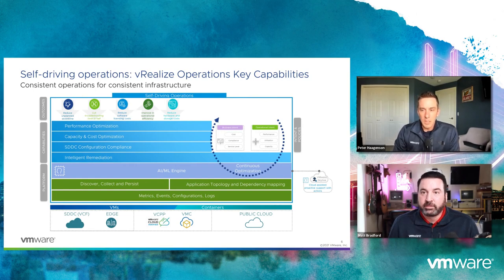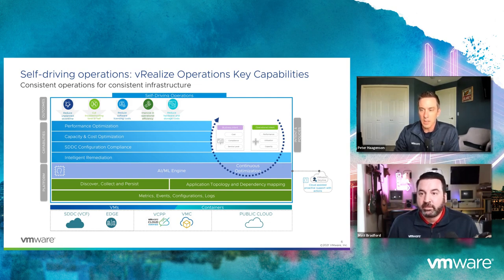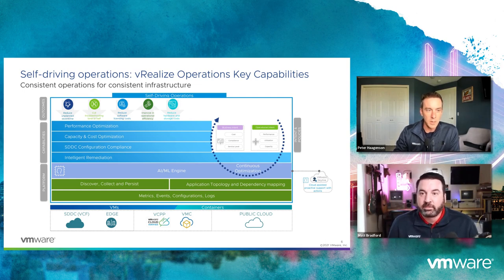Let's visualize what it means to have consistent operations for a consistent infrastructure. We're starting out with whatever cloud you may choose, whether that be private, public, VMware cloud, and even the edge. vRealize Operations and vRealize Operations Cloud starts out with collecting those metrics, events, configuration data, and logs. Then once that data has been collected, we can look at our application topology and dependency mapping and feed that data into the AI and machine learning engine to really learn and enhance your environment based on your business and operational intents. When you build in the four pillars of the platform — performance optimization, capacity and cost optimization, configuration compliance, and intelligent remediation — you're going to ultimately minimize your unplanned downtime, cut your troubleshooting time in half, reduce software licensing costs, and really improve your overall efficiency.